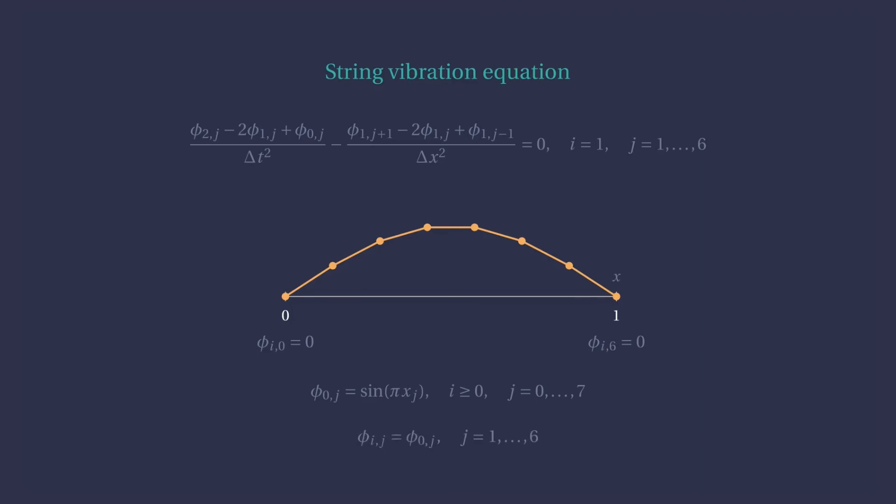So, writing in a matrix form, we find an explicit scheme to compute phi, which is second order accurate in both space and time. It is, however, also only conditionally stable, as it happens in general with explicit schemes. There are implicit schemes available, but that we'll have to wait for some other time.